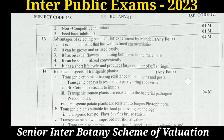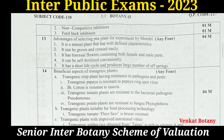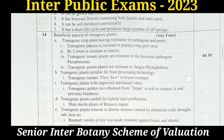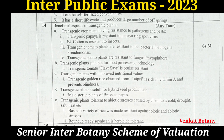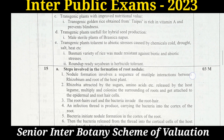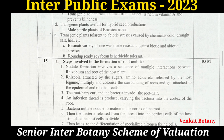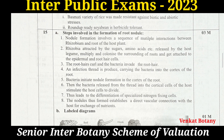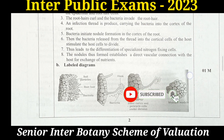Question 14: List out the beneficial aspects of transgenic plants. There are eight points to mention in a, b, c, d, e format. Mentioning any of the eight beneficial aspects earns marks. Also include a labelled diagram, which carries one mark, and steps carry three marks.